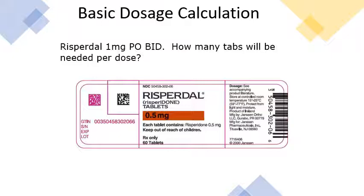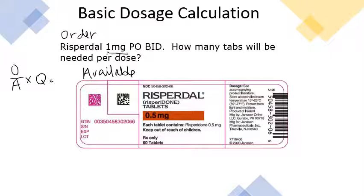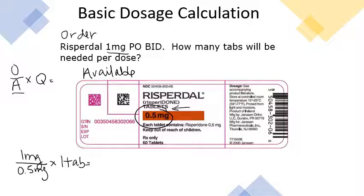First, we'll cover basic dosage calculations. The order is Risperidol 1 milligram PO BID — how many tablets will be needed per dose? Many students like to use the formula: order over availability times quantity. Our order is 1 milligram, availability is 0.5 milligrams, and quantity is 1 tablet. Dividing 1 milligram by 0.5 gives you 2 tablets.